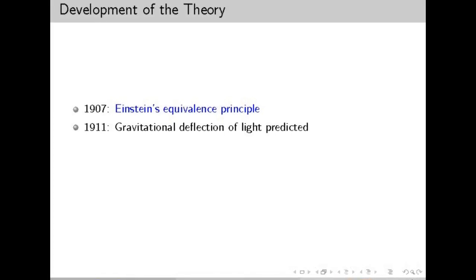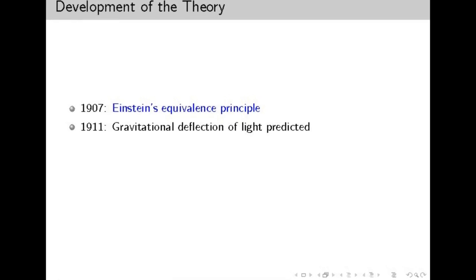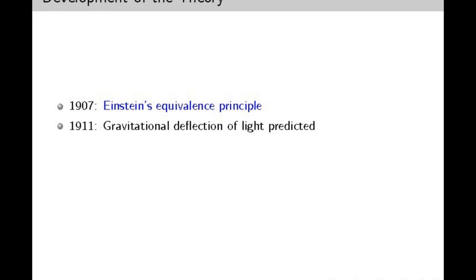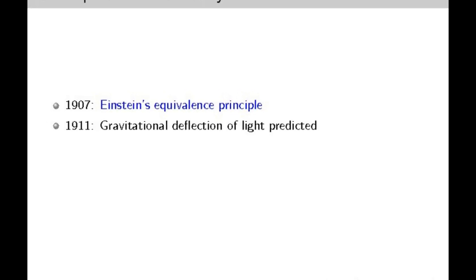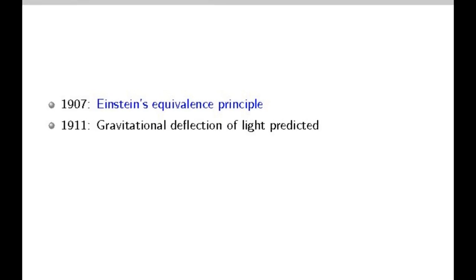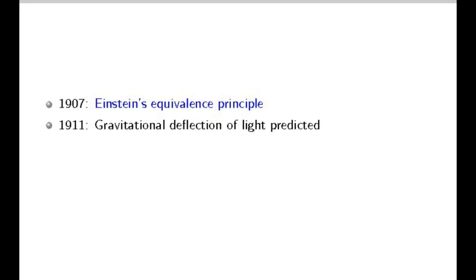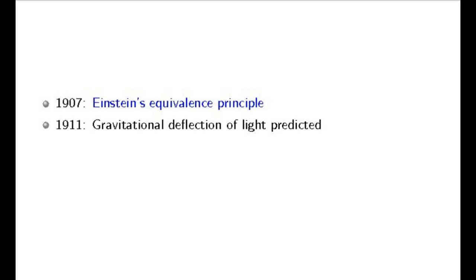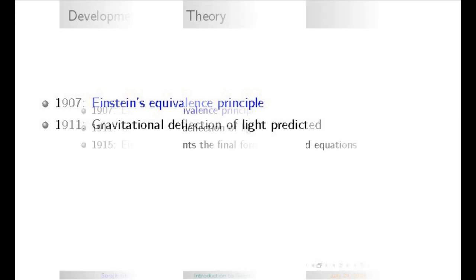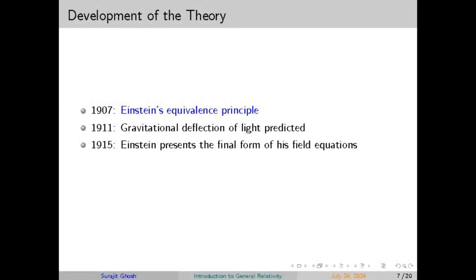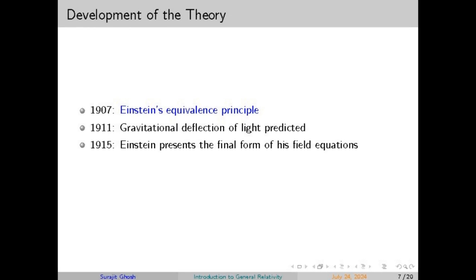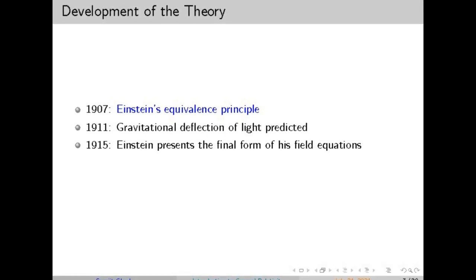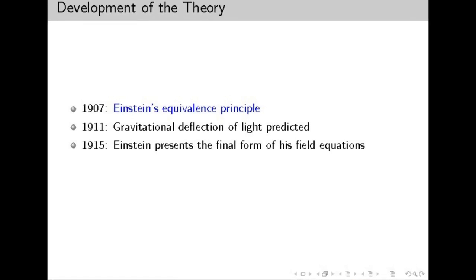Another example is the study of black holes. Observations of black holes — both through their gravitational effects and through their radiation, such as the famous image of the black hole in the galaxy M87 — have opened up new areas of astrophysics, testing the limits of general relativity. Additionally, the theory's predictions about the expansion of the universe have led to important discoveries. The observation of the accelerating expansion of the universe, attributed to dark energy, is a phenomenon that general relativity helps explain, and this expanding universe model continues to be a key area of research in modern physics.